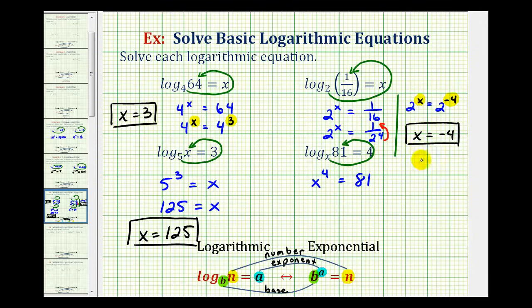If we take a look at the prime factorization of 81, 81 is equal to 9 times 9, and each 9 is equal to 3 times 3. So we can write this as x to the fourth equals 3 to the fourth.